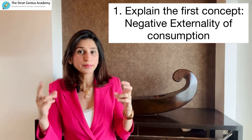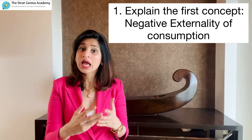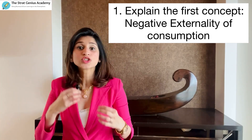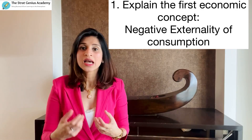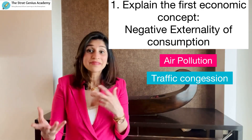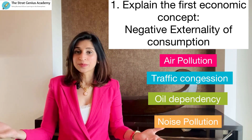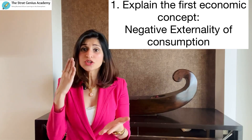Now comes the theoretical hypothesis — this basically means using your knowledge of economics and relevant data to arrive at a conclusion to the research question. The first step is to explain the concept of negative externalities of consumption and how consumption of conventional vehicles leads to market failure. You can draw a diagram showing the negative externalities caused by conventional vehicle consumption. Make sure to explain this diagram properly, then talk about the several negative externalities associated with automobile consumption — air pollution, traffic congestion, oil dependency, and noise pollution.